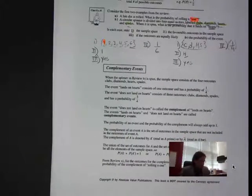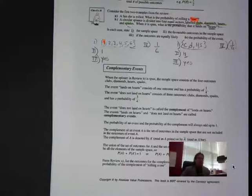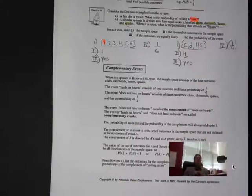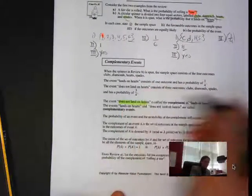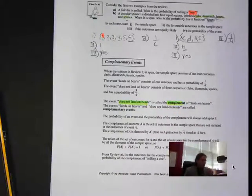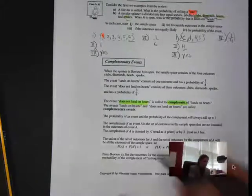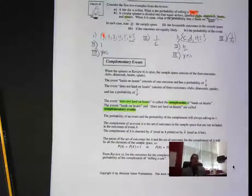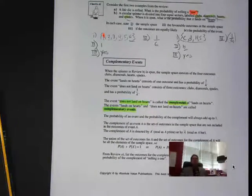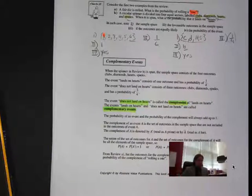Now, complementary events. The event that does not land on hearts is called the complement — it's the event that we don't want to happen. It's everything else that could happen in the sample space. So the complementary event of flipping heads on a coin would be tails. The complementary event of rolling a one on a die would be rolling a two, three, four, five, or six — everything else that could happen.